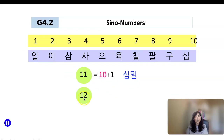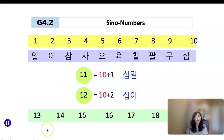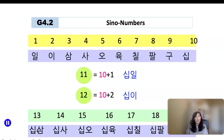How about number 12? It is 10 plus 2, so 십이. It goes on: 십삼, 십사, 십오, 십육, 십칠, 십팔, 십구 — all the way through 19.